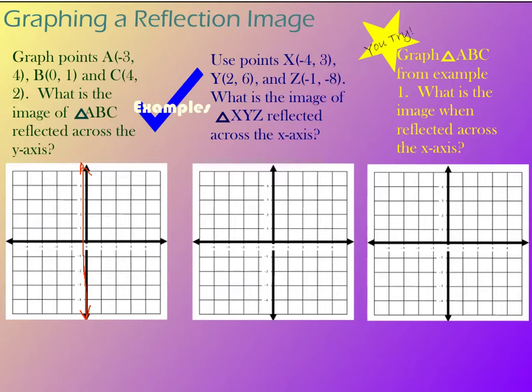And I have three points that I need to plot on my graph. So A is negative 3, 4. And B is 0, 1. C is 4, 2. So there's my three points. I'm going to take those. And because this is an entire image, I'm going to connect those with lines to make my triangle.